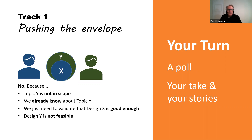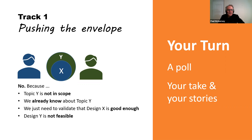Okay, let's look at the results. The winner is 'topic Y is not in scope' — a classic for sure. I'm surprised no one said 'we already know about topic Y.' I hear that all the time: 'Didn't we do a study on that last year? We already know what those people think.' That's interesting.